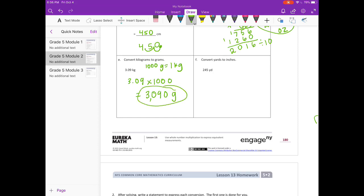Convert yards to inches. Well, there are 36 inches in one yard. So I'm going to need to do 245 times 36. Start with the 6. 6 times 5 is 30, carry the 3. 6 times 4 is 24, plus 3, 27. 6 times 2 is 12, plus 2 is 14.